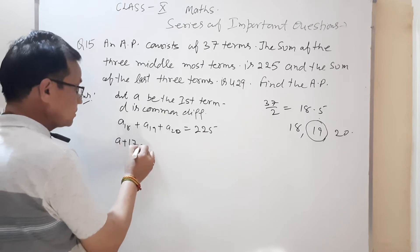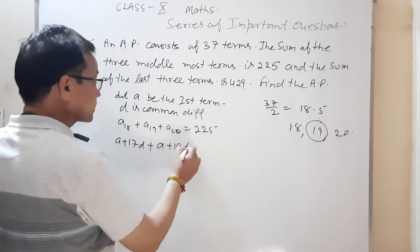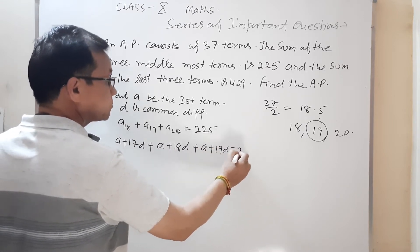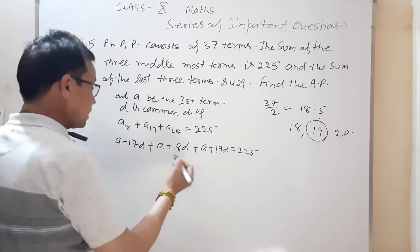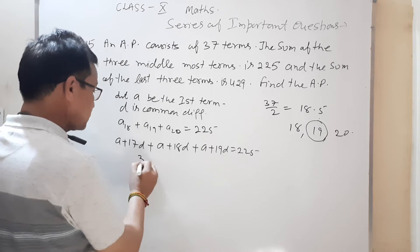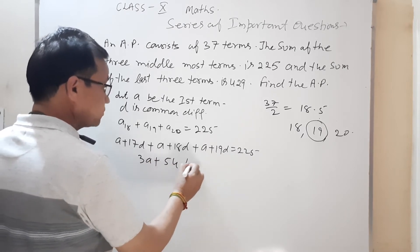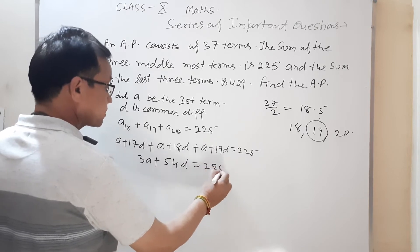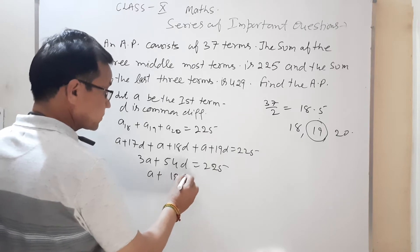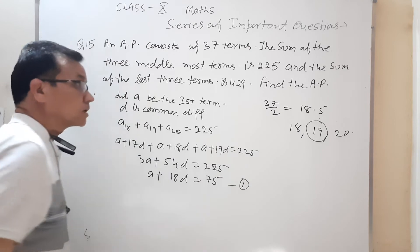a₁₈ = a + 17d, a₁₉ = a + 18d, a₂₀ = a + 19d, is equal to 225। Calculate करो: 3a + 54d = 225। 3 से divide हो सकते हैं, तो divide कर देते हैं — यह number 1 equation बनेगी: a + 18d = 75।